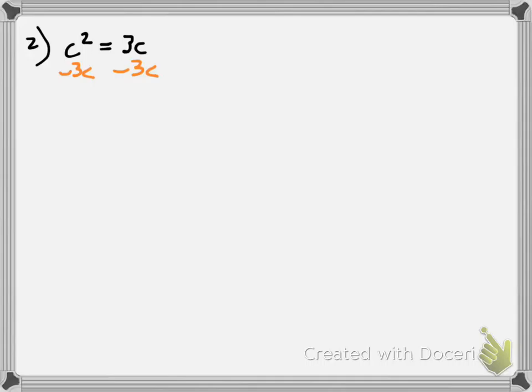What do you think the first step in this problem is going to be? Think about what we need in order to use the zero product property. Yeah, we got to get zero on one side, everything else on the other side. The best case is to take everything to where the largest exponent is. So I'm going to subtract 3c from both sides. We need to create an equation where we have a polynomial on one side and a zero on the other. So we get c² - 3c = 0.